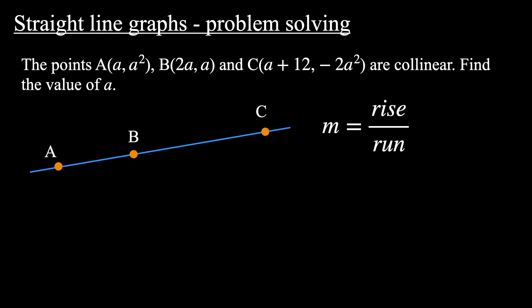So the way we find the gradient, which we usually label as m, is to calculate the rise over the run. So if we look at the two points B and C, we could draw a horizontal line from B to C and then a vertical line up to C. The vertical distance we call the rise, the horizontal distance we call the run, and we can calculate that with this formula: y₂ - y₁ over x₂ - x₁. And if we looked at the gradient between A and B, that would be the same.